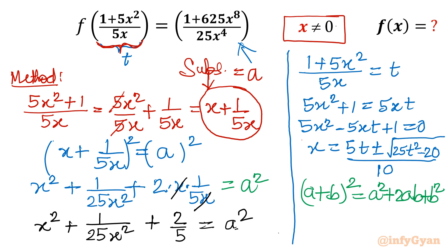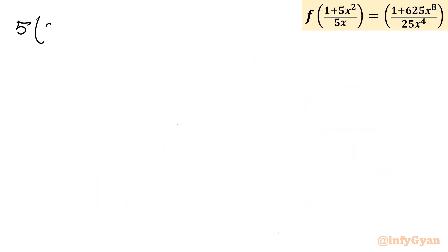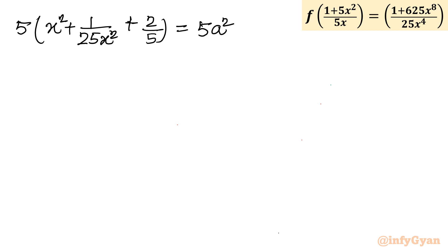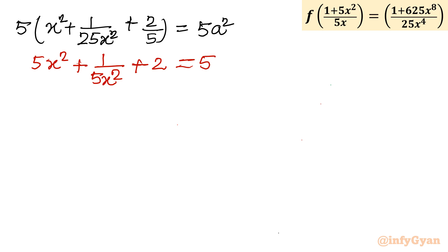Now I will multiply this equation by 5: 5(x² + 1/(25x²) + 2/5) = 5a², which gives 5x² + 1/(5x²) + 2 = 5a². Rearranging: 5x² + 1/(5x²) = 5a² - 2. This is our key identity.